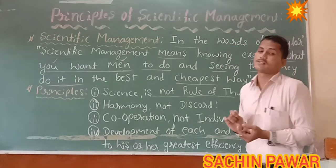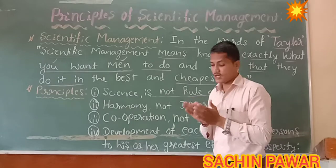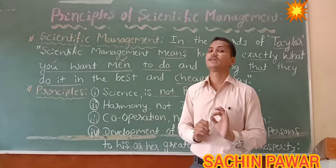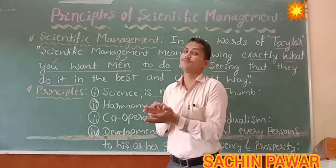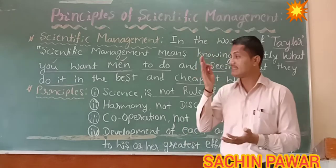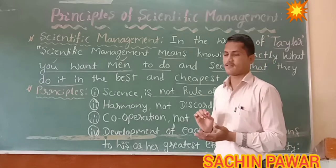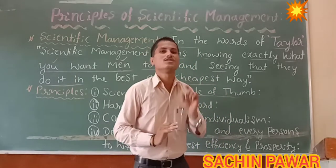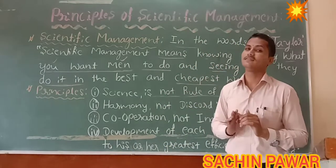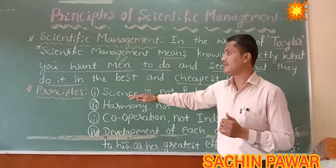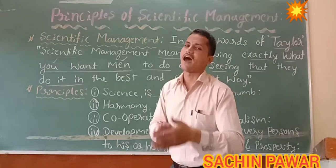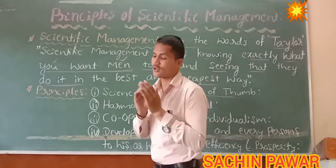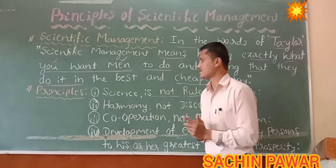Taylor's first principle is that decisions should be taken in a scientific manner, not on the basis of rule of thumb. In scientific management, decisions and judgments are made with the cooperation of employees, and each work is categorized, analyzed, and assigned to specialized workers.